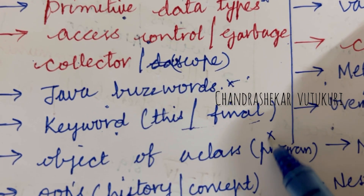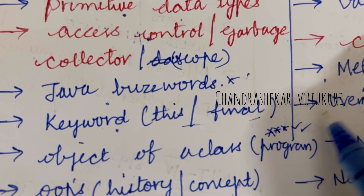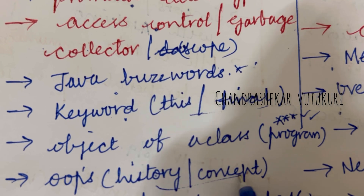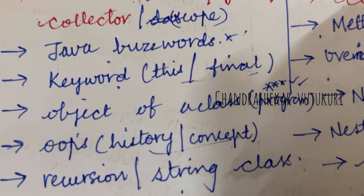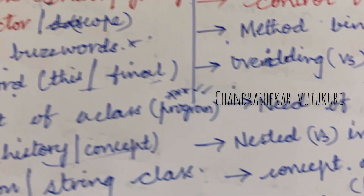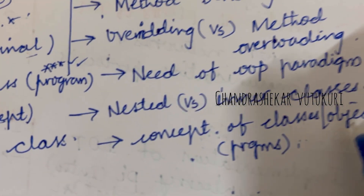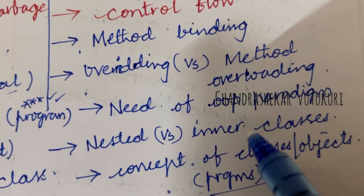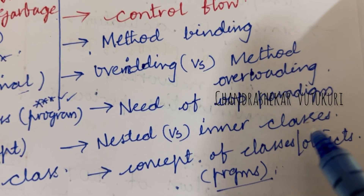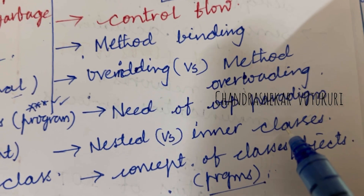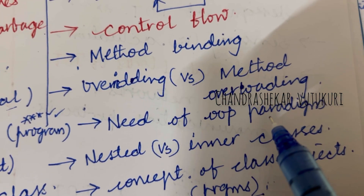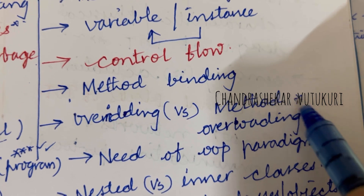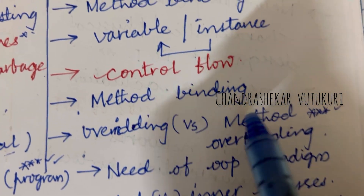Object of a class — a program related to object of class may be the topmost question this time. OOP history and the concept may be the short question. Recursion, the string class, the concept of classes, and the object related to class — you are going to get a program for sure, dear students. Nested versus inner classes, their differences, and the need of OOP. Method overriding and method overloading are set as the topmost and gone-short question.